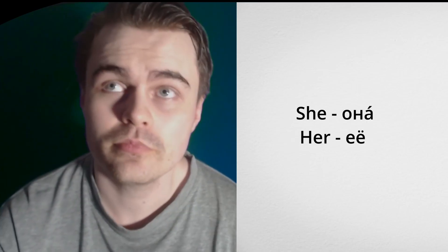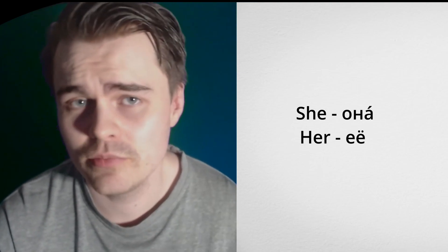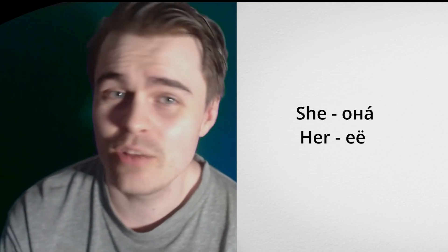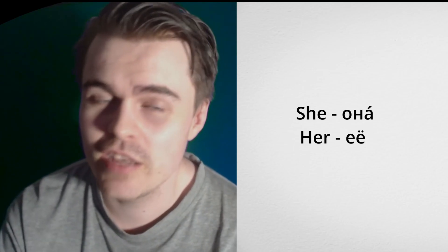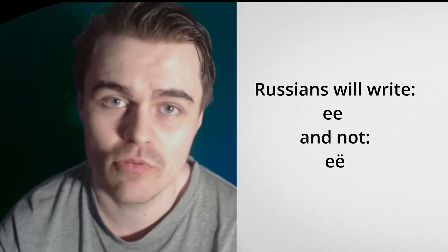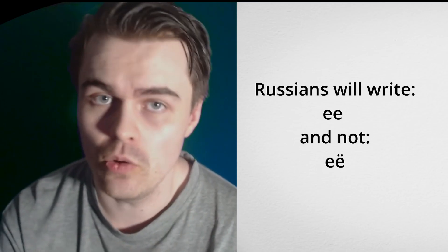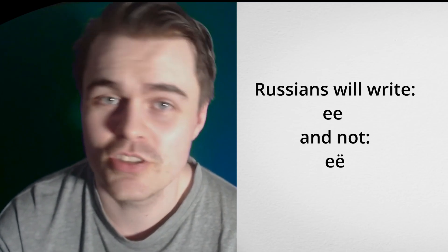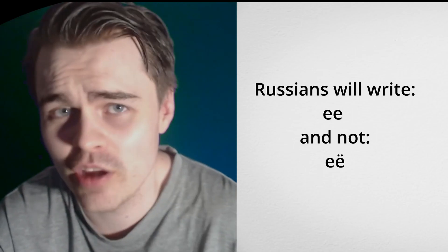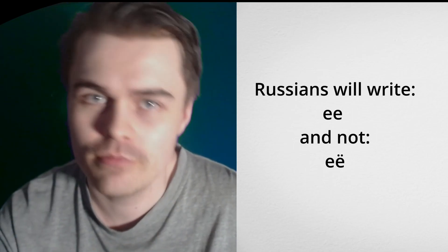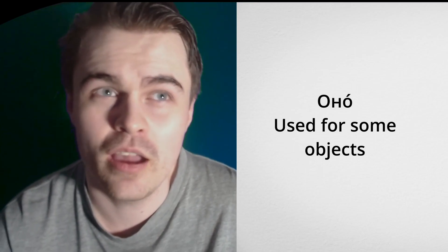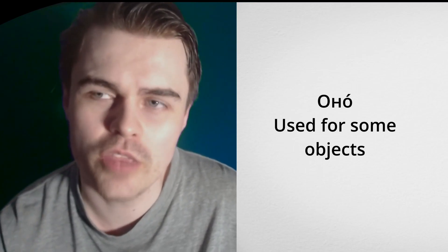Then we have 'he,' which is on, and the acted-upon form is yevo. Then we have 'she,' which is ona, and the acted-upon form is yeyo. Russian people often don't write the yor character, so you'll see it written differently, but it is pronounced yeyo.